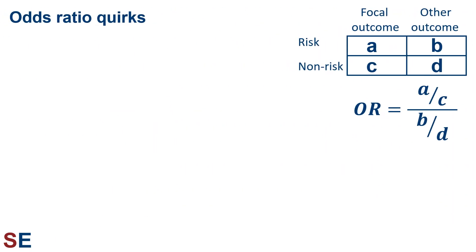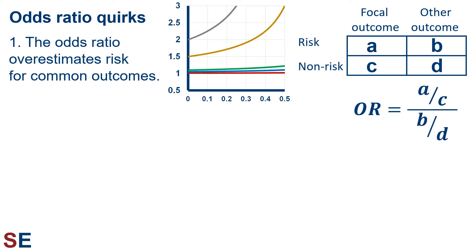The odds ratio has a couple of quirks we should be aware of. The first quirk is that the odds ratio overestimates the relative risk, especially for common outcomes. The figure shows the proportion of the focal outcome on the x-axis. The y-axis shows the value of the odds ratio for five different relative risk values: 1.01, 1.05, 1.1, 1.5, and 2. When the focal outcome is rare, the values match, but as the focal outcome becomes common, the odds ratio increases, especially when the relative risk is more than 1.05. The downside is that if we calculate the odds ratio for focal outcomes that aren't super rare, the odds ratio will tend to dramatically overestimate the relative risk.